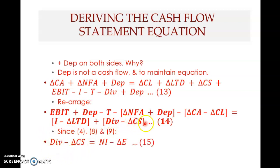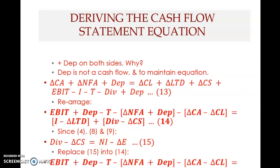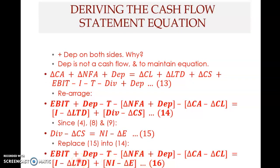Now we need to note this as well: dividend minus change in common stock is the same thing as net income minus change in equity. Why? Because if you add retained earnings to dividends it becomes net income. If you add retained earnings to change in common stock, you get change in equity. Therefore these two are the same. So equation 16 is the same as equation 14 except for this one element — all other elements are the same.